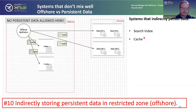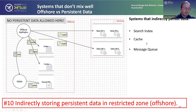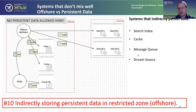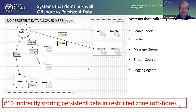Other examples of systems that indirectly store data in the wrong zone: a queue file attached to a queue that could land in the wrong zone; a stream source like Kafka that frequently has a file storage associated with it; and logging agents, which are one of those systems that also frequently write data into restricted areas.